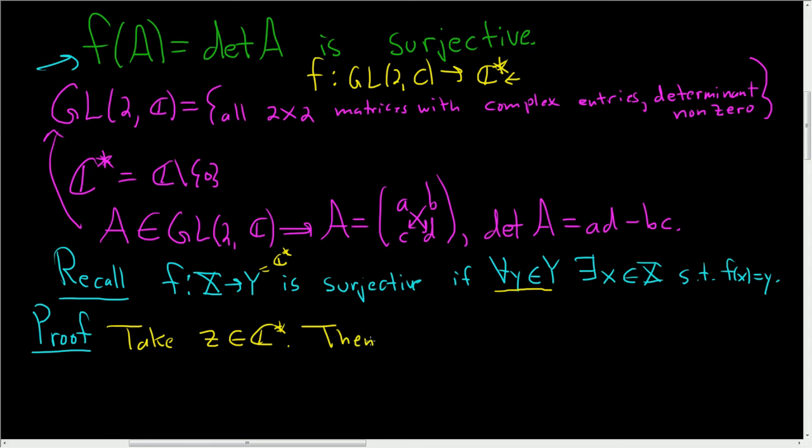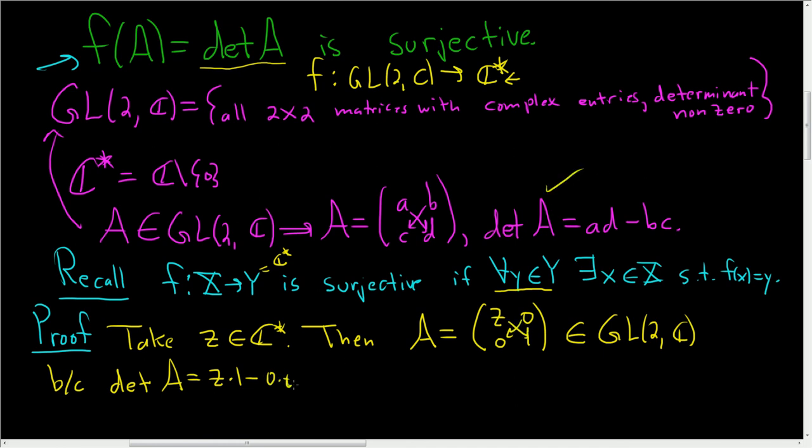And then we need to produce a matrix such that the determinant of that matrix is equal to z. So then let's look at the matrix A equals (z, 0, 0, 1). So then this guy is in this set because its determinant is z times 1 minus 0 times 0, right? Using the formula we have up here for determinant.